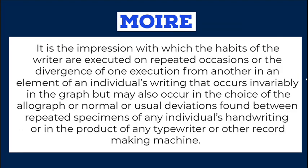MOI: It is the impression with which the habits of the writer are executed on repeated occasions, or the divergence of one execution from another in an element of an individual's writing that occurs invariably in the graph, but may also occur in the choice of the holograph or normal or usual deviations found between repeated specimens of any individual's handwriting or in the product of any typewriter or other record-making machine.